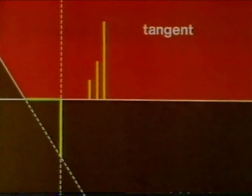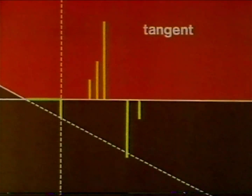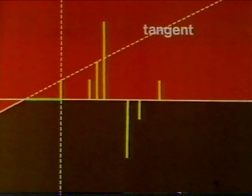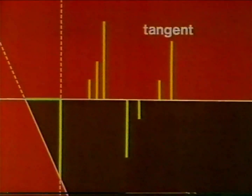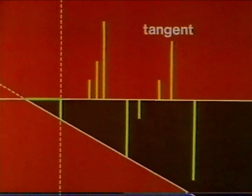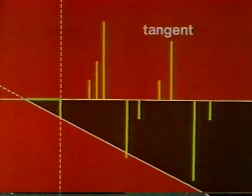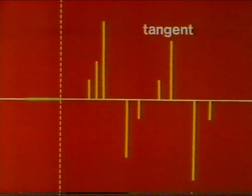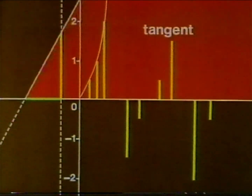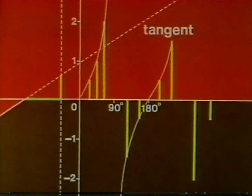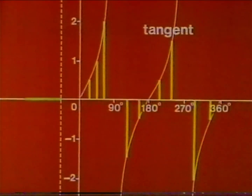In the second quadrant. In the third quadrant. In the fourth quadrant. A vertical axis and a scale. The tangent of 180 degrees is zero, and so is the tangent of 360 degrees.